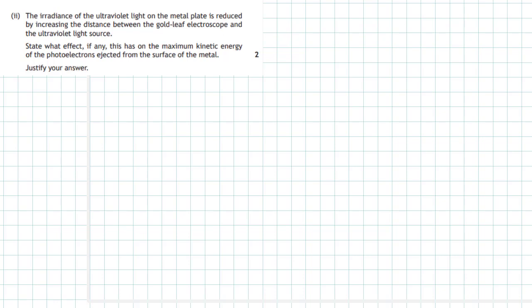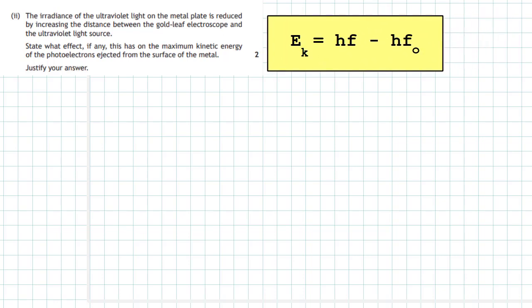Well, let's begin with the equation for the kinetic energy of the photoelectrons emitted from the surface of the metal. Remember, Ek stands for the kinetic energy of the photoelectron. Hf, well that's the energy of the incoming photon. And Hf0, well we know that to be the work function of the metal.